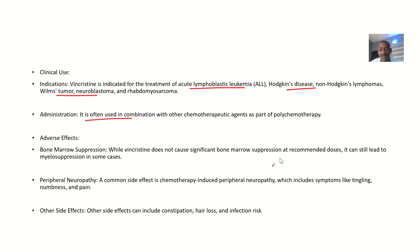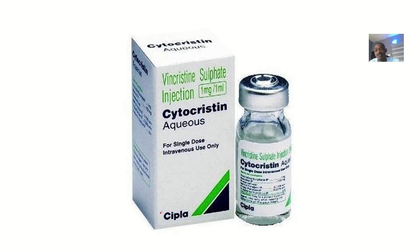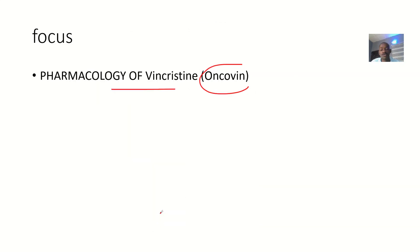Adverse effects when taking this drug include bone marrow suppression, peripheral neuropathy, constipation, hair loss, and increased infection risk. The drug can suppress the immune system, making patients much more vulnerable to infections. That covers the pharmacology of vincristine.